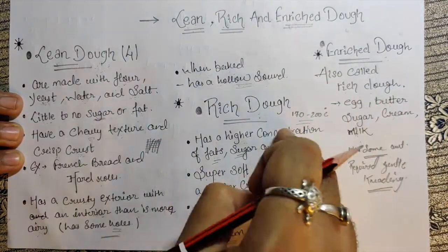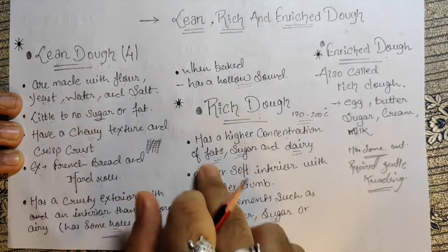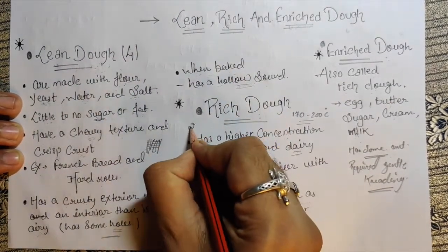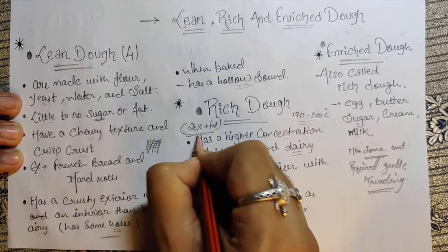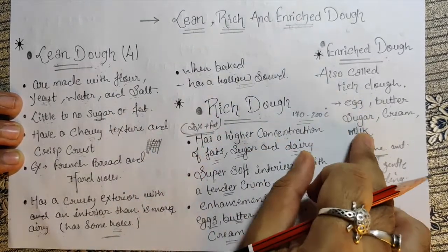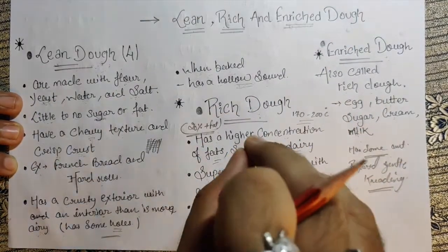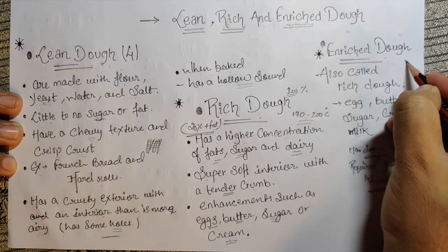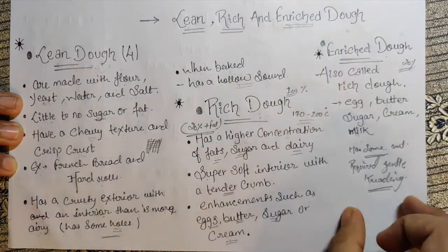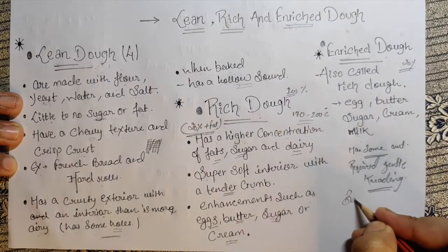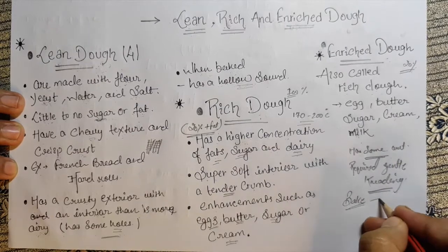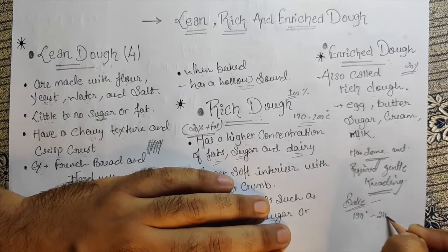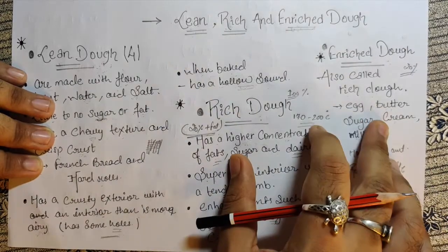Enriched dough requires gentle kneading. Rich dough means completely rich — no compromising on fats, like 20 percent plus fat, a lot. But when it comes to enriched dough, thoda sa fat hota hai — not as much as rich dough. So here we are adding fat but not to the full 100 percent level. The baking temperature for enriched dough is around 190 to 210 degrees Celsius.